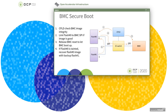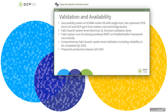The CPLD verifies BMC image integrity and authenticity. If the image is good, BMC boots. If the image is tainted, it recovers from the phase 0 image with the backup phase 1 and continues the boot process. Regarding validation: phase 1 board and system-level electrical, SI, and functional validation are already complete. Phase 2 system can run the AI training workload on the paddle-paddle framework successfully. Comprehensive phase 2 validation including reliability targets is planned to complete by Q2 this year.